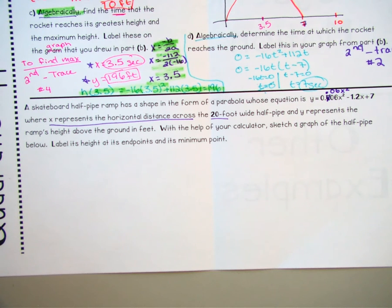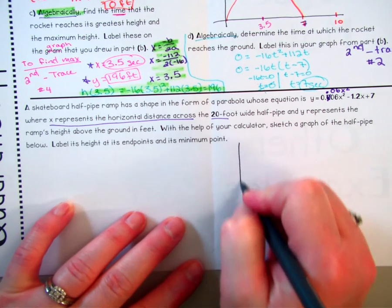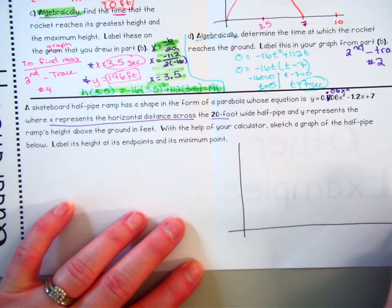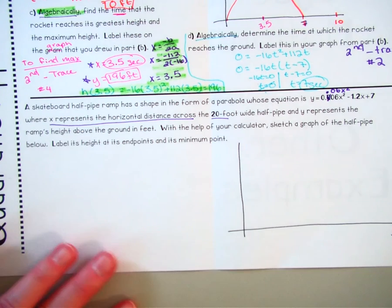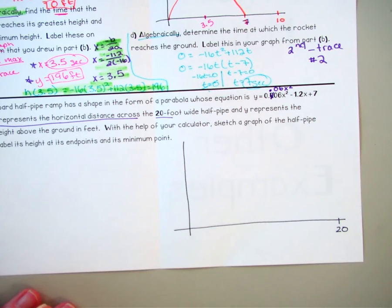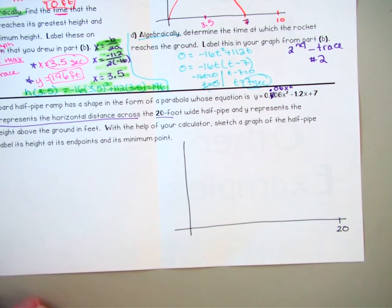X represents the horizontal distance across the halfpipe, which they told us is 20 feet. Okay. That's helpful. Y is the ramp's height above the ground in feet. With the help of a calculator, sketch a graph of the halfpipe labeled below and then label its height. Okay. So here we go. Again, it's going to be in quadrant one. All of these are going to be in quadrant one with these kinds of situations.